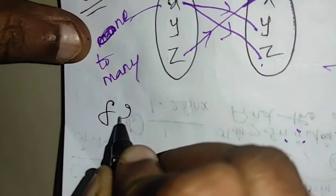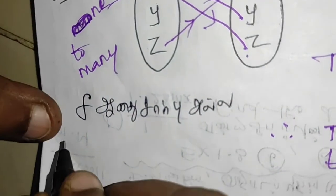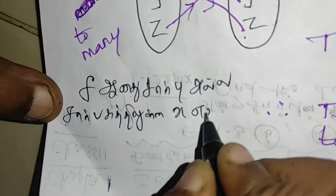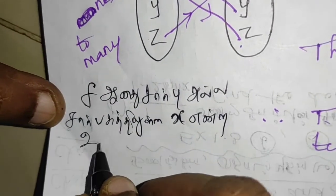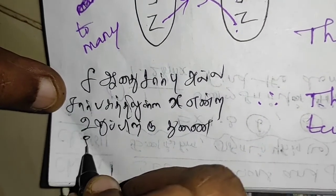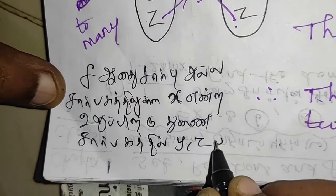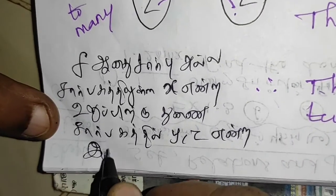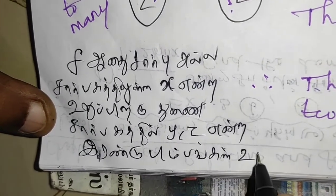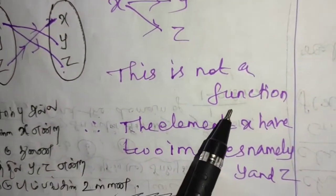F is not a function. Since x has two images y and z, this is not a function. That is why this is not a function. Okay, thank you.